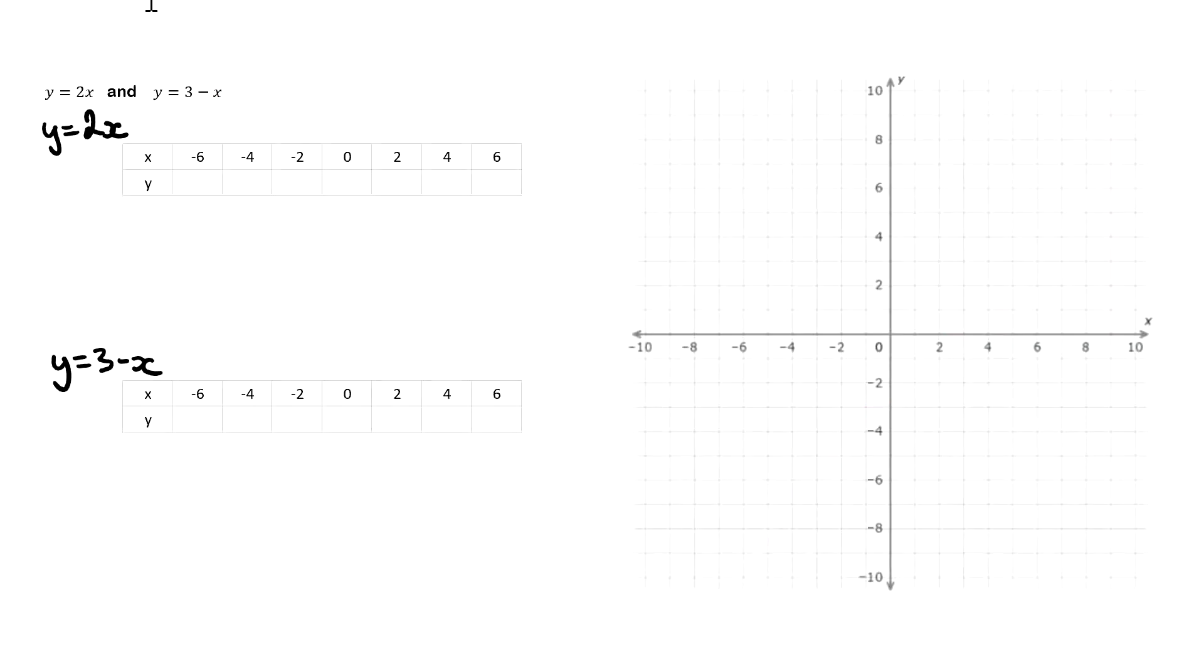We're going to repeat that process but now with these two equations here. We have y equals 2 times negative 6 and that equals negative 12. I then repeat it, but instead of negative 6, we do negative 4 this time. Negative 8. And so forth until the table is complete.